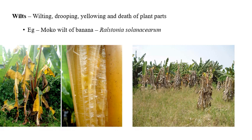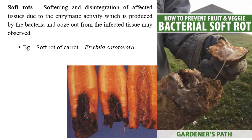The next symptom is wilt. As the name indicates, wilting, drooping, and yellowing occur, and at later stages, death of plants can be observed. The example is moco wilt of banana, caused by Ralstonia solanacearum. Yellowing, drooping, and eventual death of the plant are seen — almost 95% of plants die. Sometimes, a brown or white ooze can be produced from the infected tissues.